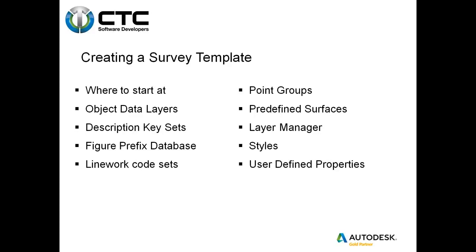We'll talk about the layer manager and how to control color, line weight, and line type. We'll get into styles — as mentioned before, styles are the building bones behind templates; they're what make your objects look the way they do. At the end we'll talk about user-defined properties, which allow us to bring in information above and beyond point, northing, easting, and zenith description — things like location, measure down, and direction — and use it in a label style to, say, shoot a catch basin and have it display the rim elevation, invert elevation, and direction of the invert. It's a way to almost eliminate human error by having the computer do it for you.